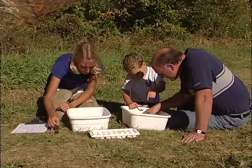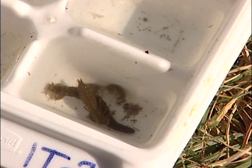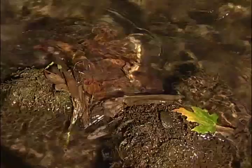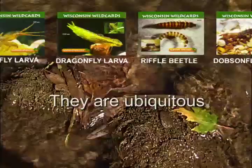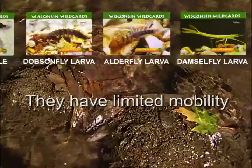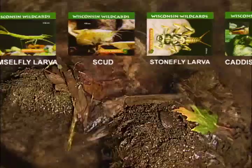A biotic index assesses water quality based on the organisms living in the water. The Water Action Volunteers' biotic index is based on macroinvertebrates — organisms without backbones that are visible without the aid of a microscope. The macroinvertebrates used in the biotic index were specifically chosen because: one, they are ubiquitous, found in streams and rivers all over the world; two, they are not very mobile, so they cannot escape pollution inputs very easily; three, they live a portion or all of their life cycle in the water; and four, they utilize oxygen from the water to live, not oxygen from the air.